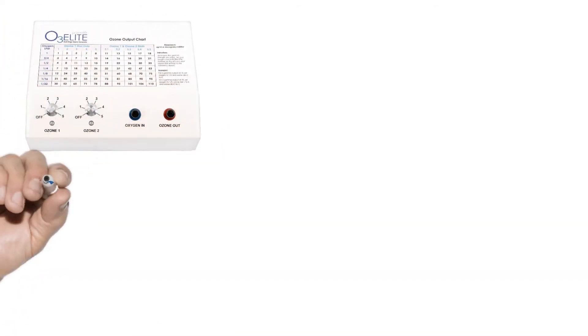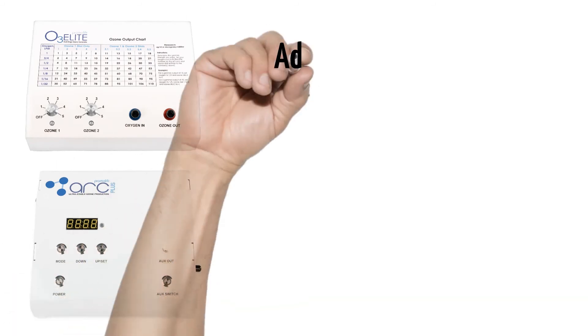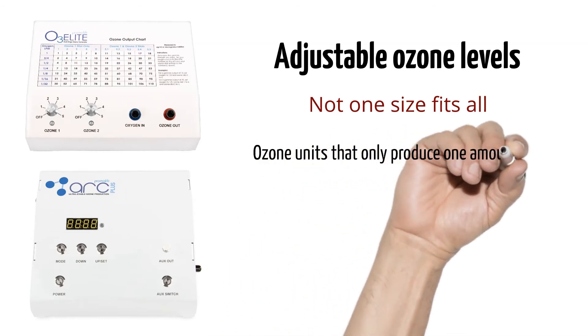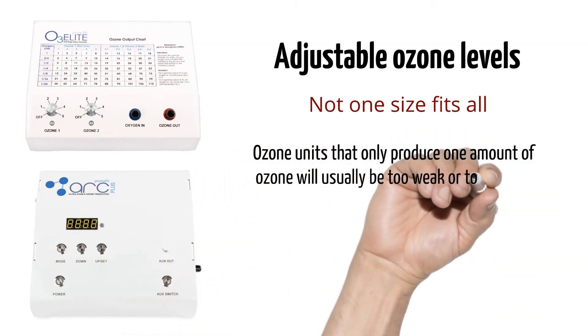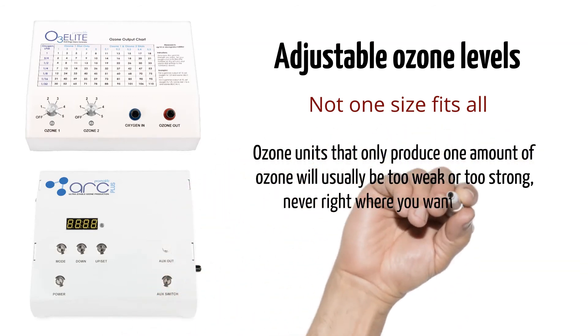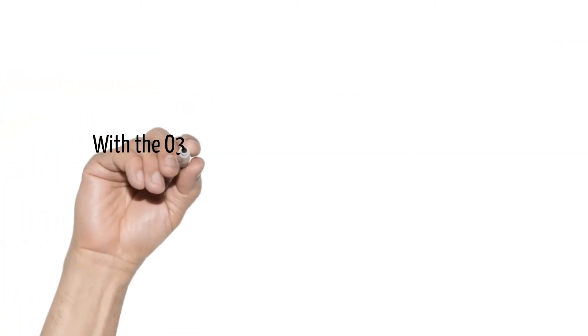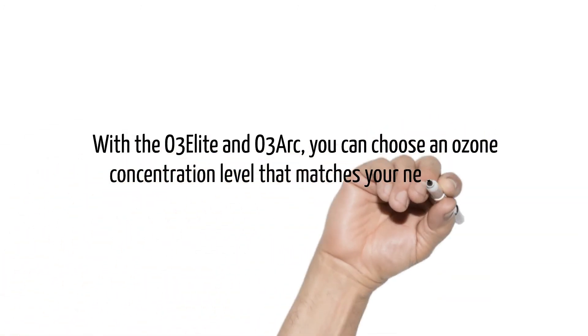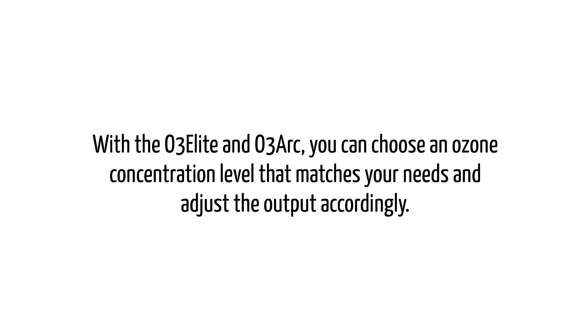One leading advantage with the O3 Elite and O3 Arc are adjustable ozone levels. These are not one-size-fits-all machines. Ozone units that only produce one amount of ozone will usually be too weak or too strong, never right where you want them to be. With the O3 Elite and O3 Arc, you can choose an ozone concentration level that matches your needs and adjust the output accordingly.